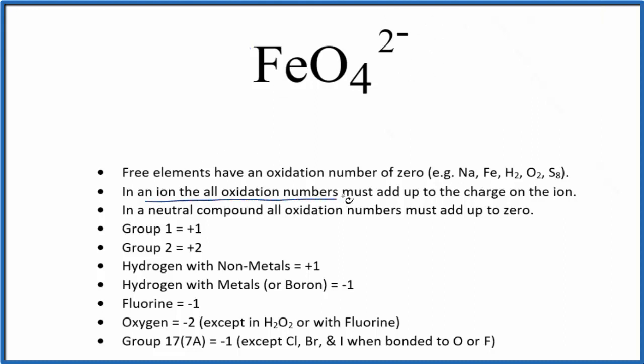all the oxidation numbers will add up to the charge on the ion. So the oxidation numbers for the iron and the oxygens here, all of this will add up to this 2-. We don't know what iron is - this is a transition metal - but we do know that oxygen is almost always